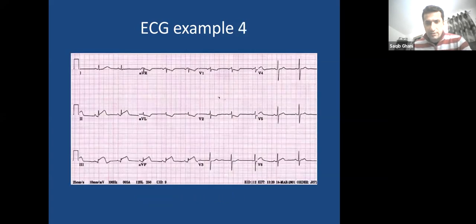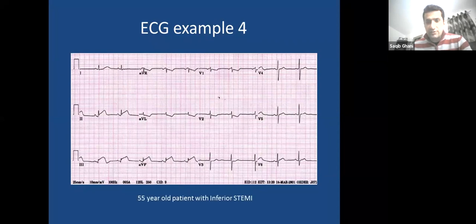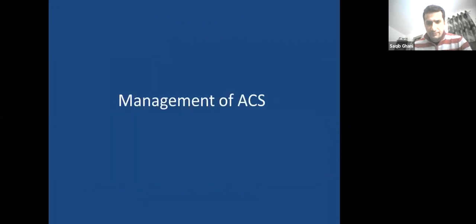This ECG shows ST elevations in inferior leads with reciprocal changes. In clinical context — a sweaty, clammy, unwell patient — this represents an inferior ST elevation MI. These examples illustrate how ECG findings must be interpreted alongside clinical history.